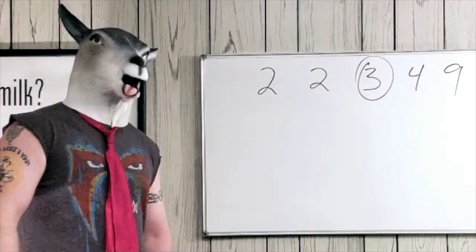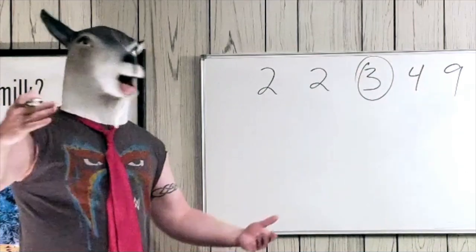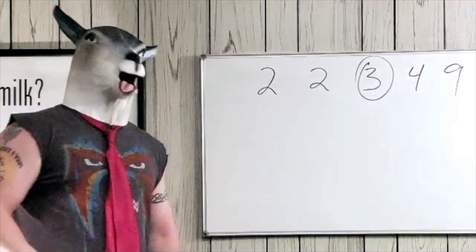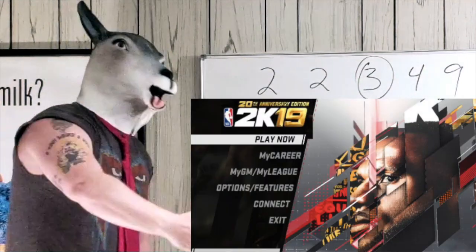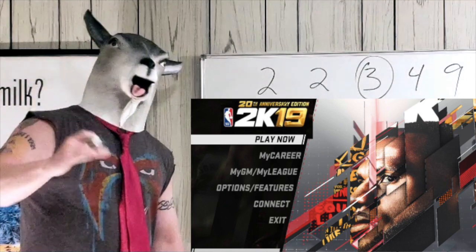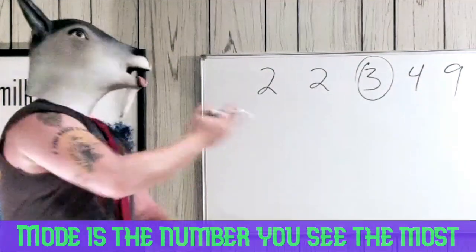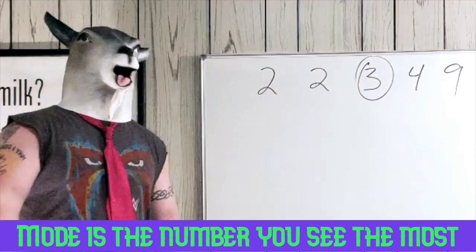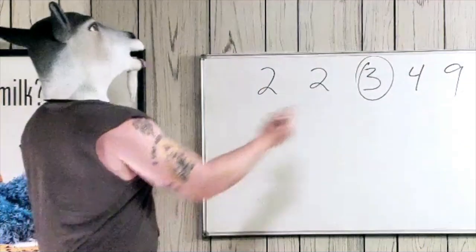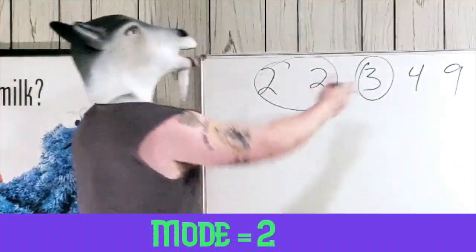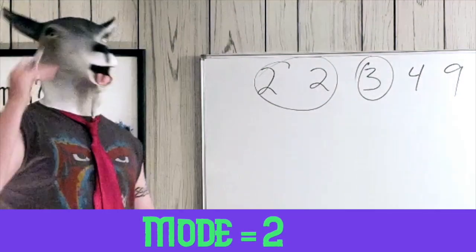So let's go to the next one — the mode. Now listen, here's how you're gonna remember: your favorite game mode is the one you go to the most. Like in 2K, if you play My Court the most, that's your favorite game mode — you see that one the most. So what number do you see the most? What's the favorite number? Right here, I'm looking — there's two 2's, and it's the only one that appears more than once. So our mode is 2.